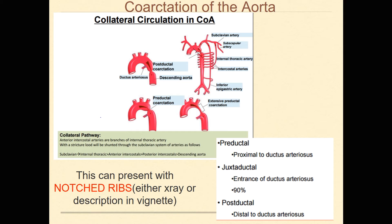So if you see an x-ray with little notches in the ribs and they ask what could be the problem with this infant, you're going to say it's most likely collateral circulation due to coarctation of the aorta. That's going to cause swelling of those vessels because the blood has to go out of these tiny ones in order to get down to the lower blood supply.